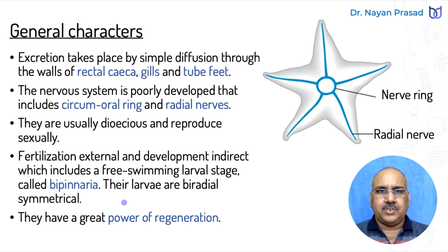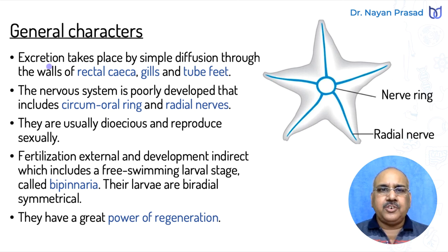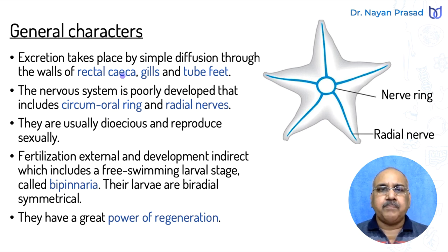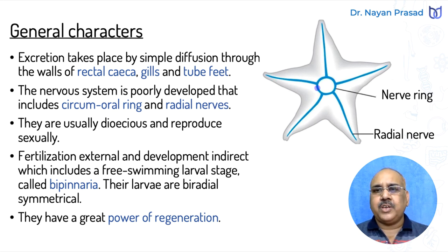Regarding excretion — the process of removing metabolic waste — the excretory system is said to be absent, but excretion takes place by simple diffusion through the walls of rectal caeca, gills, and tube feet, so some structures do help in excretion. The nervous system is poorly developed; it includes a circumoral ring and radial nerves, with the nerve ring around the oral structure and radial nerves radiating into the arms.